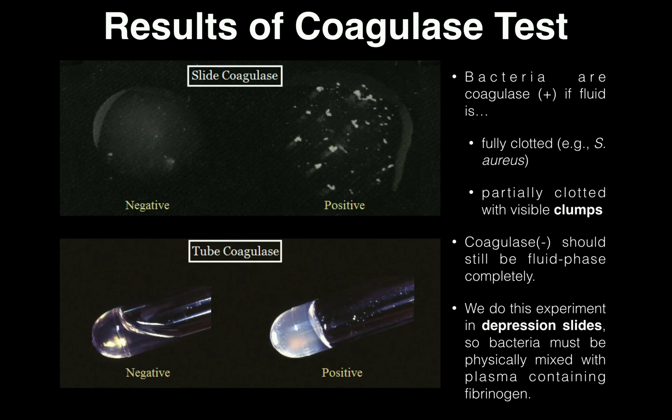When we do it on a microscope slide, it's a little bit different. Specifically, we do it in what's called a depression slide — basically a thick microscope slide with a well in it, and the test is done in the well itself. When you run this test in a depression slide, all you do is mix together the plasma with your organism of interest, such as Staphylococcus aureus or Staphylococcus epidermidis, and mix it for a few seconds and observe the results.